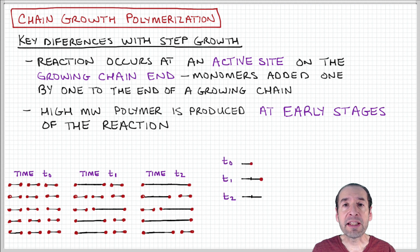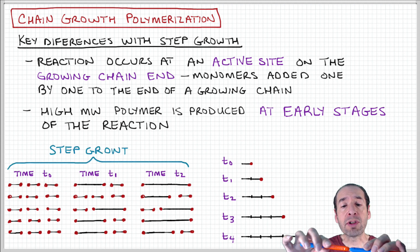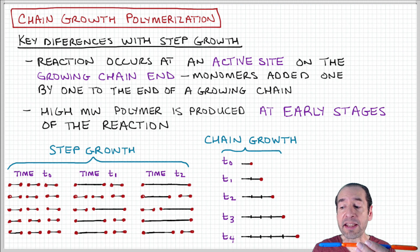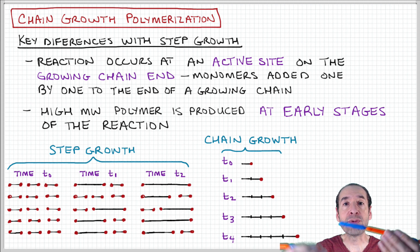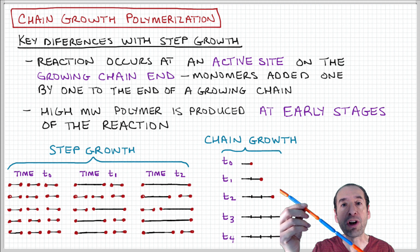Then in the later stages, it becomes more likely that growing or longer chains will join together, and in the latest stages of the reaction you join together the biggest fragments to form the largest polymer chains.